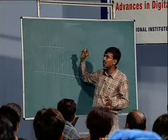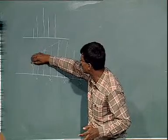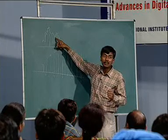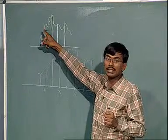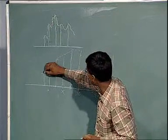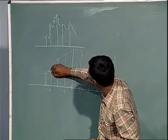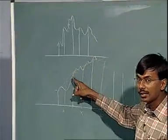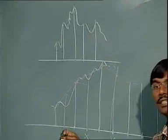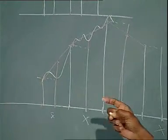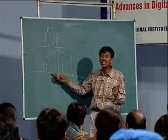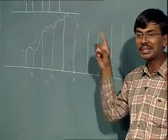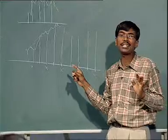We want to estimate the original signal which could be something like this. If I blow this up, essentially I will have values going in different directions, and what I want is the value at the intermediate point. In terms of signal processing, what is lost is the high frequency components of the original signal in the process of sampling.